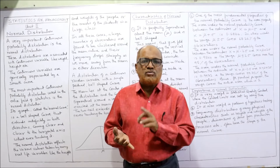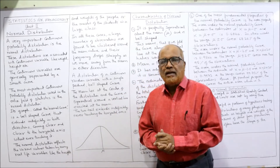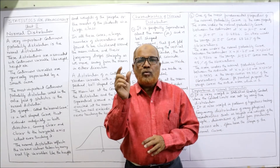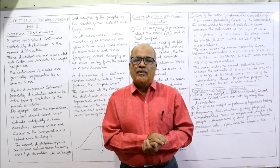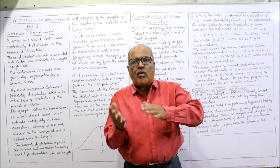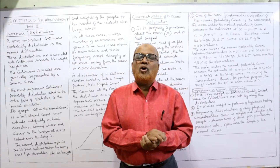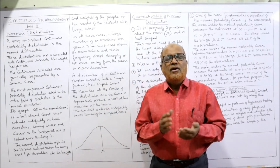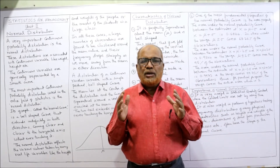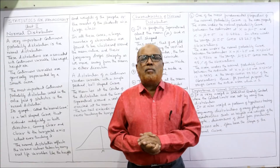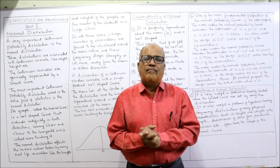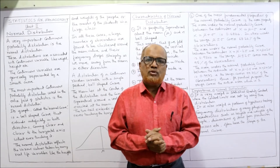There are variables which may take a whole number value or a fractional value. For those values which may take any value — whether whole number or fraction — we cannot apply discrete probability distribution; we have to apply continuous probability distribution. The most important continuous probability distribution in the entire field of statistics is the normal distribution.